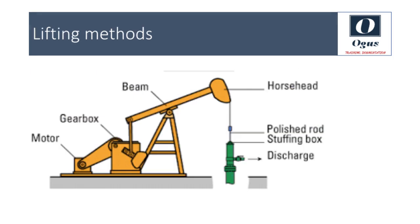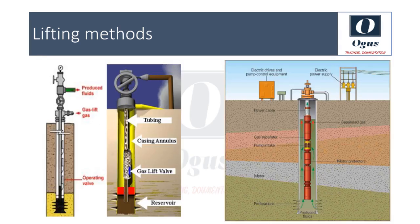Depending on the reservoir pressure available, different types of lifting methods are employed to bring the reservoir fluid up to the surface. Natural flow wells have sufficient pressure in the reservoir to lift the oil and water mixture to the surface without any special arrangement. Beam pumps are piston pumps used where reservoir pressure has dropped and there is no or little gas in the reservoir; they produce 5–40 litres of liquid per stroke. Gas lift is employed for larger fluid volumes where the reservoir contains some gas but not enough to lift fluid to the surface — gas is injected through the casing via gas lift mandrels, creating bubbles that make the fluid lighter and allow reservoir pressure to push it to surface. Compressed gas must be available at the facility for a gas lift project to work.